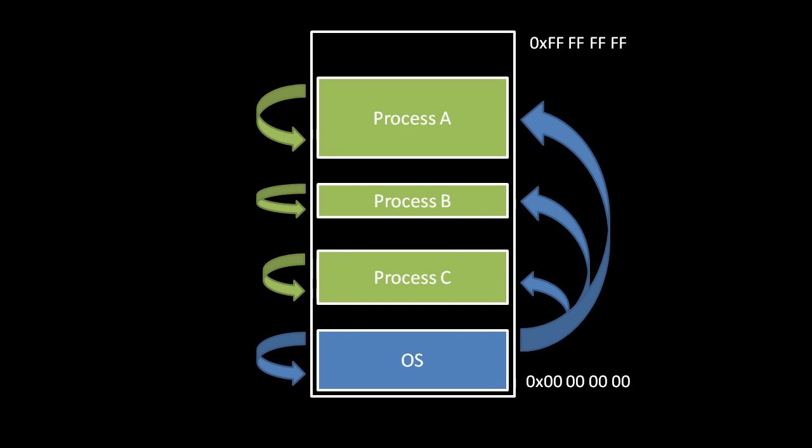When OS code runs, the CPU is put into a privilege level that allows access of the I/O devices and any address of memory. When a process runs, however, the CPU is put into a privilege level that triggers a hardware exception when the code attempts to directly access the I/O devices or addresses not allowed for that process. Processes are supposed to directly touch only their own memory, not anything else in the system.